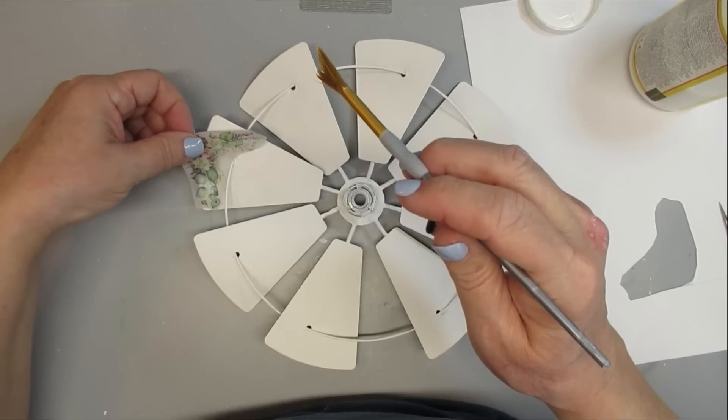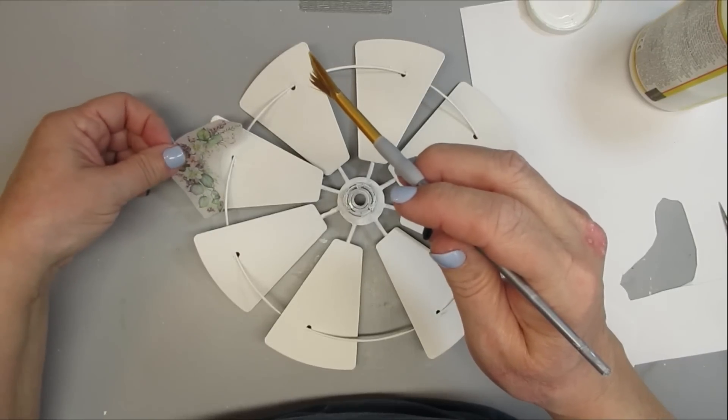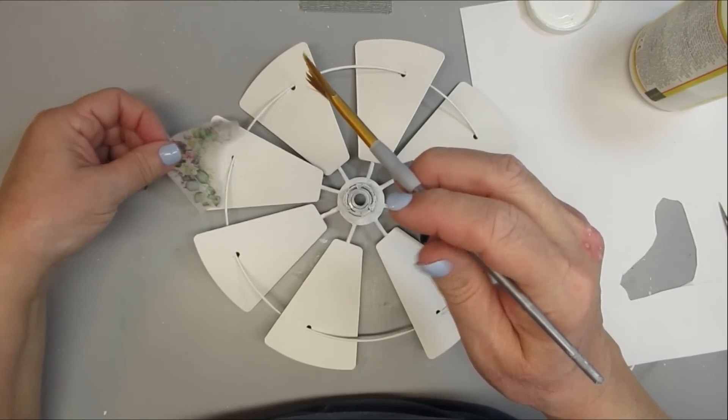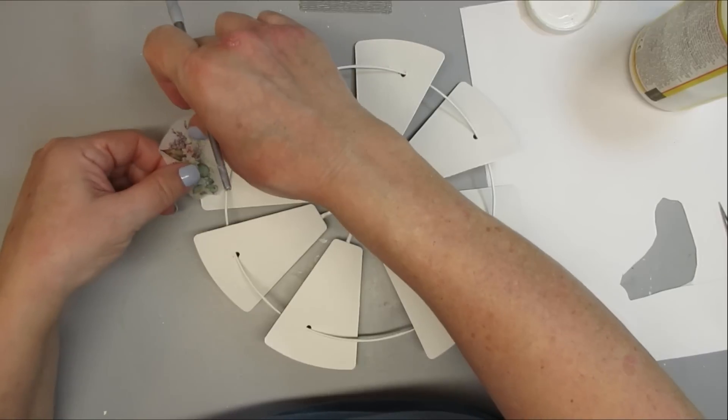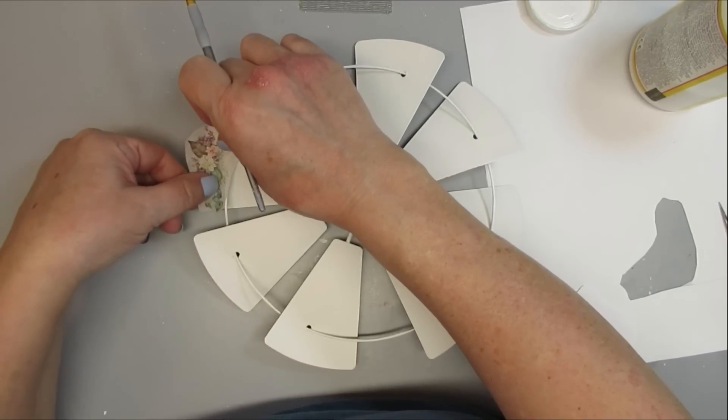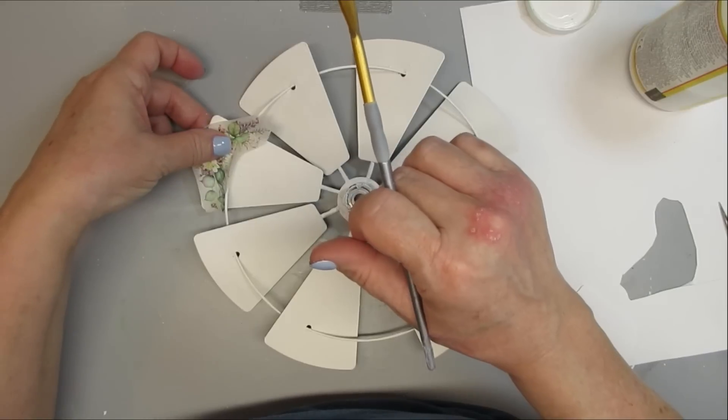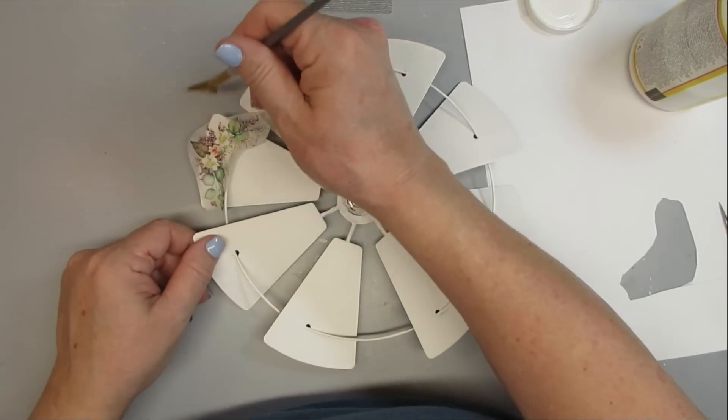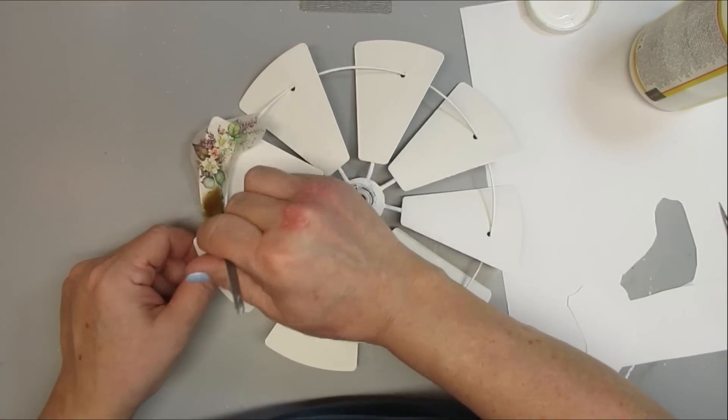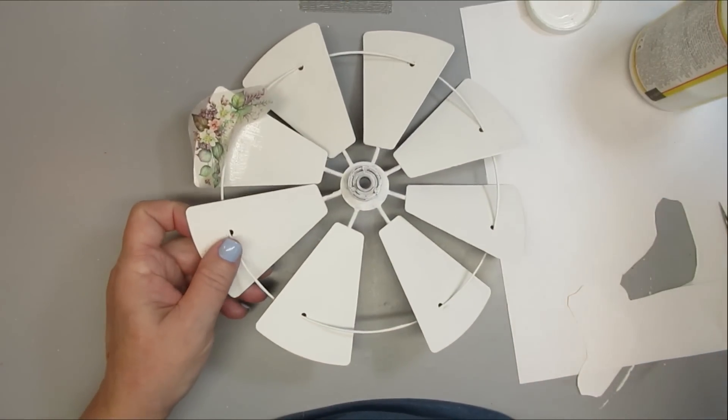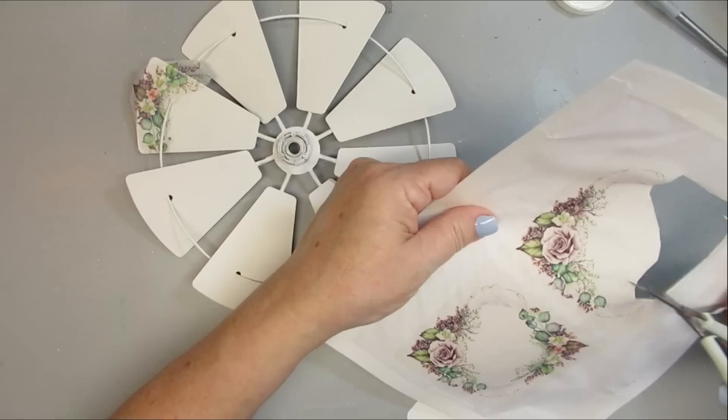And then I printed off some designs on tissue paper that I am now going to decoupage onto the different blades. So I've got some larger pieces and some smaller pieces, and I'm going to just kind of put them all over the place, not in any particular pattern. I'm just going to make sure that each blade has some type of decoupage on it.